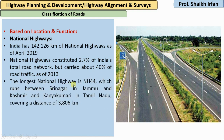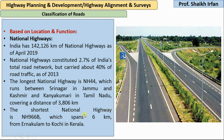The longest national highway is NH44, which runs between Srinagar in Jammu & Kashmir and Kanyakumari in Tamil Nadu, covering a total distance of 3,806 km. The shortest national highway is NH966B, which spans only 6 km from Ernakulam to Kochi in Kerala.